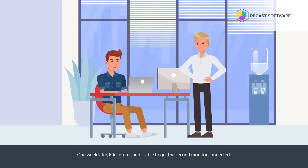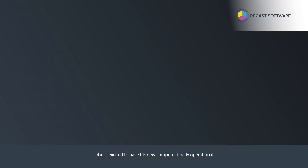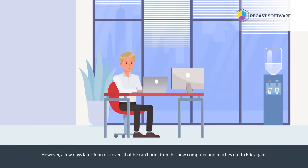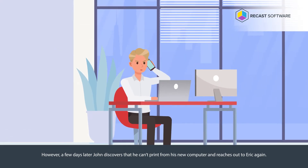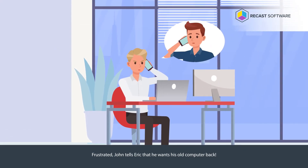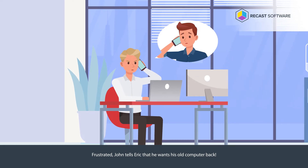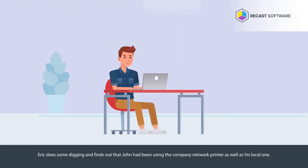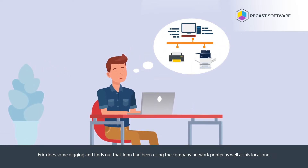One week later, Eric returns and is able to get the second monitor connected. John is excited to have his new computer finally operational. However, a few days later, John discovers that he can't print from his new computer and reaches out to Eric again. Frustrated, John tells Eric that he wants his old computer back. Eric does some digging and finds out that John has been using the company network printer as well as his local one.